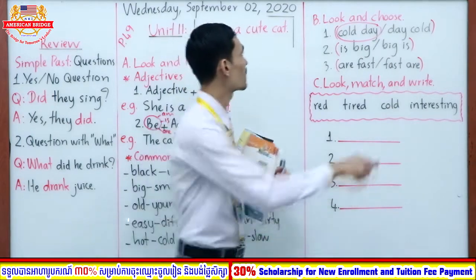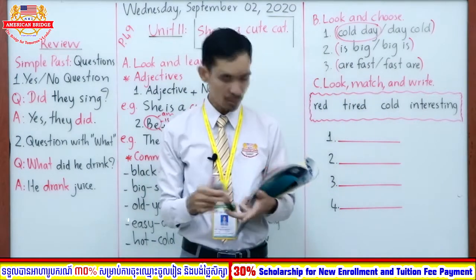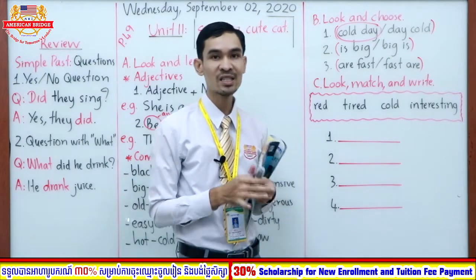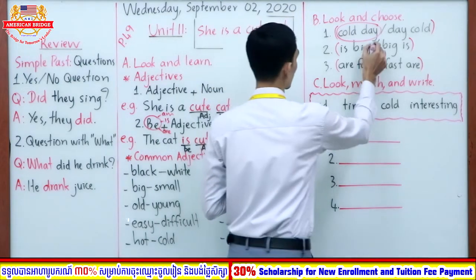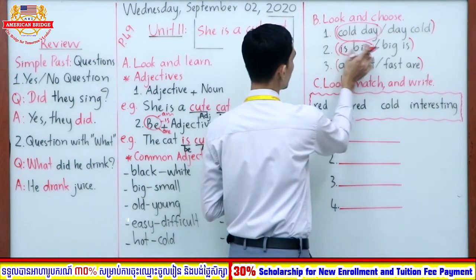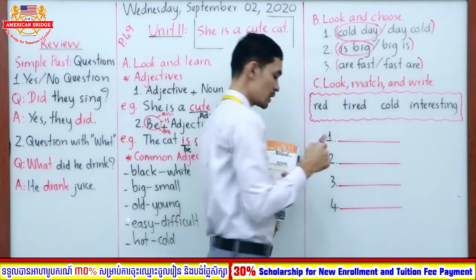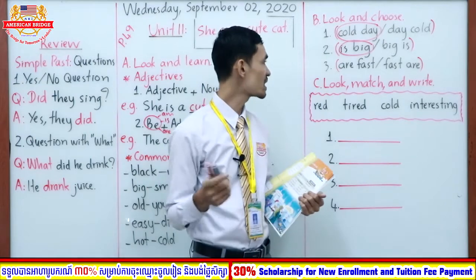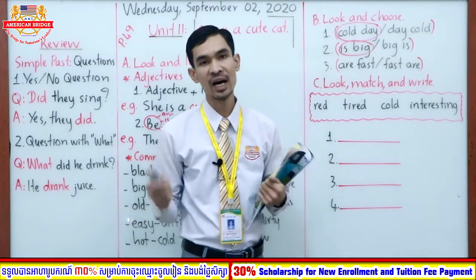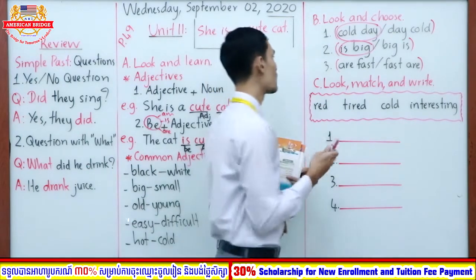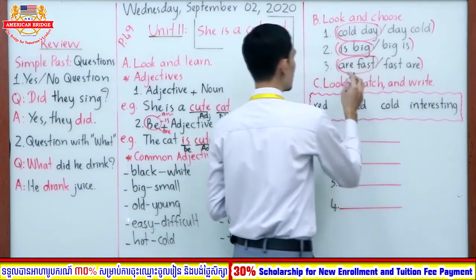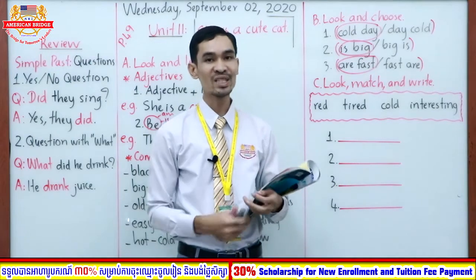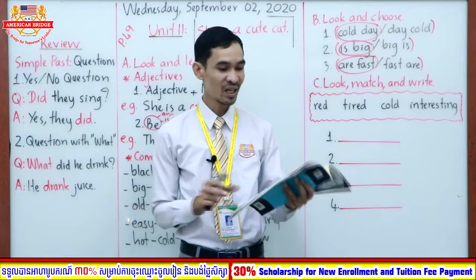Number two — 'is big.' Our form is be plus adjective, so the answer is 'is big.' 'Is' is the be verb and 'big' is the adjective. We don't have adjective plus be. Number three — 'are fast.' It is the same form as number two: be plus adjective, where 'are' is the be verb and 'fast' is the adjective. I hope you understand this exercise well.